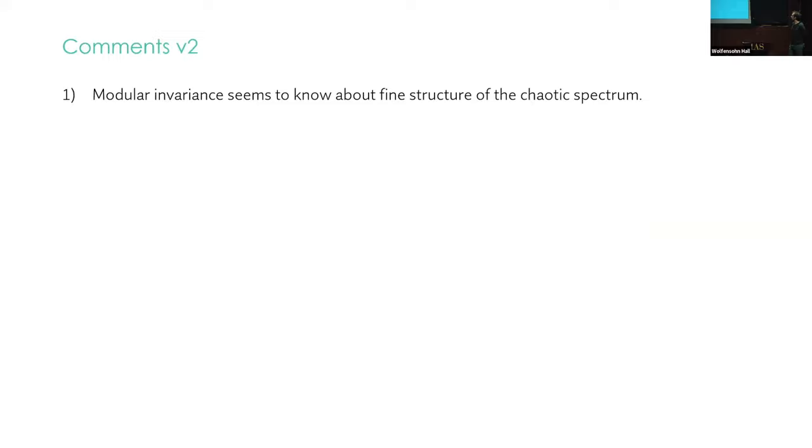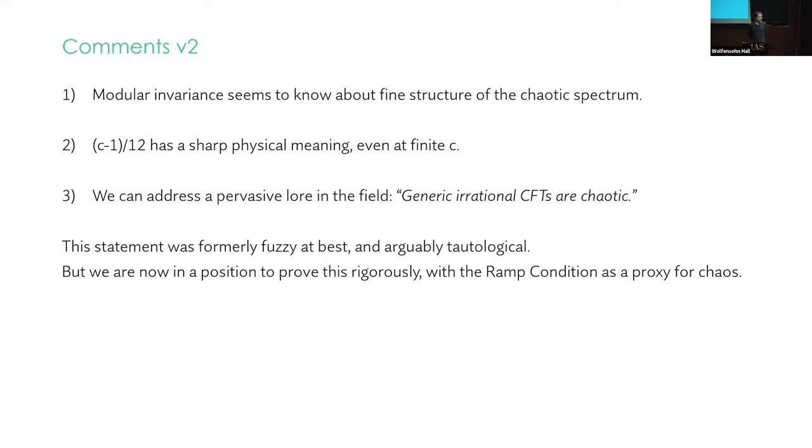Some comments. The first is that modular invariance seems to know about the fine structure of the chaotic spectrum. The second is that C minus 1 over 12 has a sharp physical meaning, even though we're at finite C. It is the threshold below which the states and the modular images are effectively non-chaotic. This threshold is sharp from the point of view of the spectral decomposition.